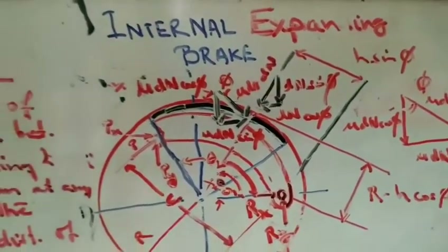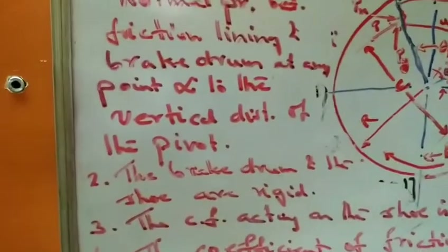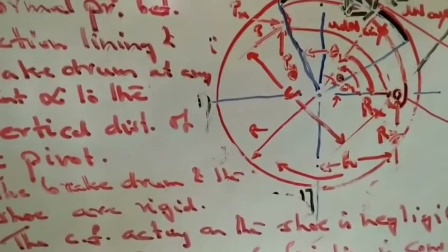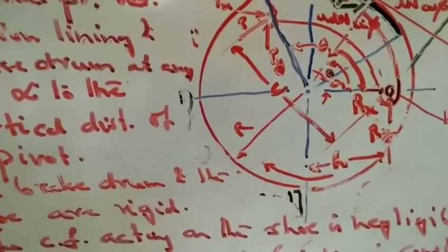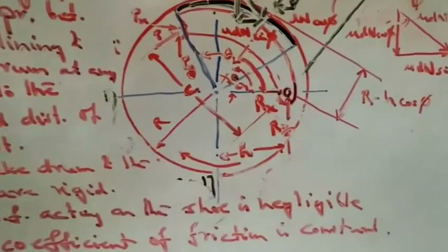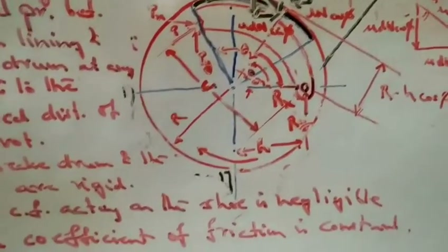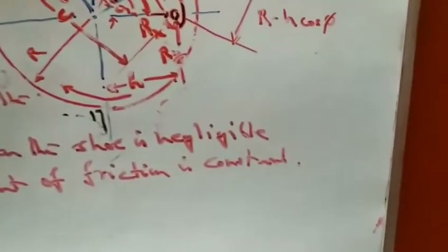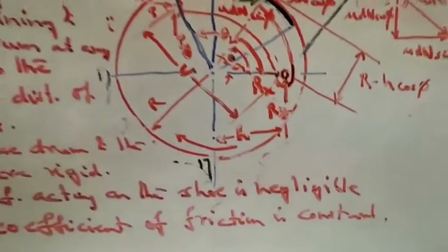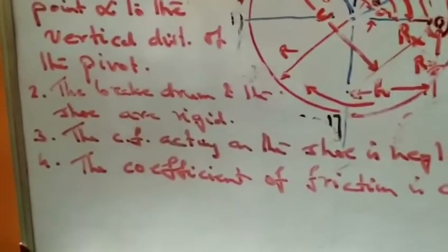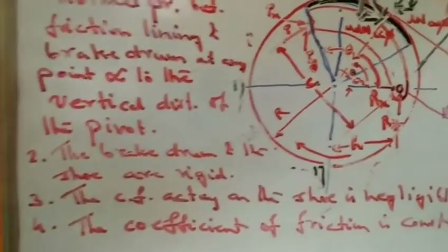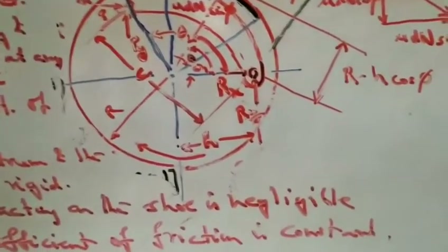The second assumption is that the drum and the shoes are rigid — there is no deformation. The third assumption is that the centrifugal force acting on the shoe is negligible; we do not consider the effect of centrifugal force on the shoe. The fourth assumption is that the coefficient of friction mu between the friction lining and the drum is constant.